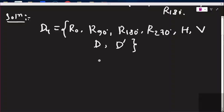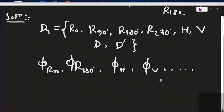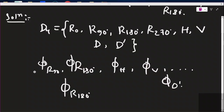There are 8 elements in D4, so we can find 8 inner automorphisms — phi_{r90}, phi_{r180}, phi_h, phi_v, phi_d, and so on. But we are asked to find only phi_{r180°}, the inner automorphism induced by r180° only.